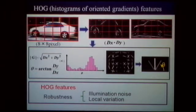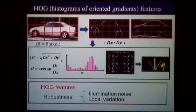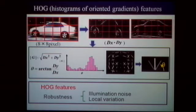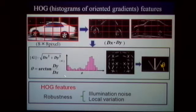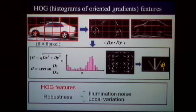Briefly, the HOG features work as follows: the input image is divided into many blocks — in our case, 8x8 pixels. Edge detection is performed for horizontal and vertical directions. Using these, the gradient intensity and orientation are calculated by a simple equation, and the orientation theta is voted for each pixel. Consequently, we obtain HOG features, which have robustness to illumination noise and local variations.